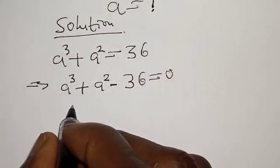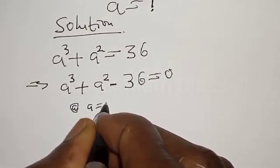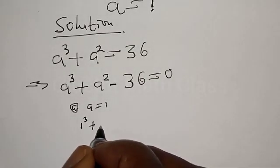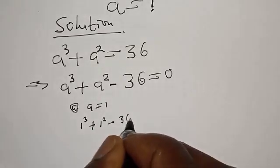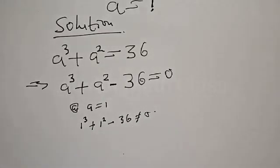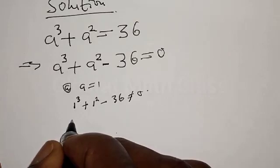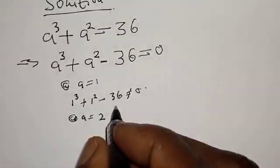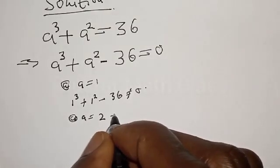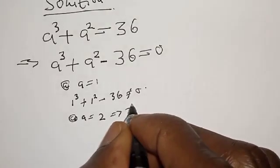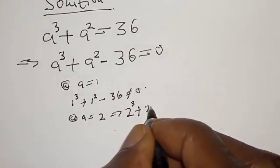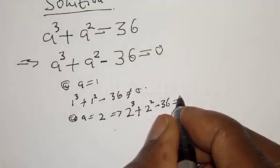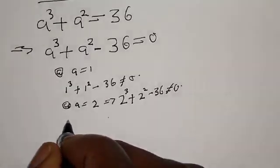Let's test at a equal to 1: we have 1 raised to power 3 plus 1 squared minus 36, which is not equal to zero. Then let's check if a is equal to 2: we have 2 raised to power 3 plus 2 squared minus 36, which is also not equal to zero.